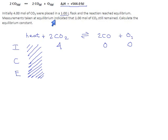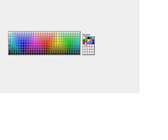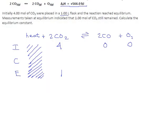Measurements taken at equilibrium indicated that one mole of carbon dioxide remained — one divided by one means our concentration is down to one mole per liter. Always look for a column where you know two of the three things; that's an easy place to start. We started with 4 M of CO₂ and dropped to 1, so apparently we lost 3. The ratio of CO₂ to CO is 2:2, meaning those numbers always match, so the CO change is also 3. The ratio for oxygen is 1:2, so oxygen is always half as great, making that 1.5.